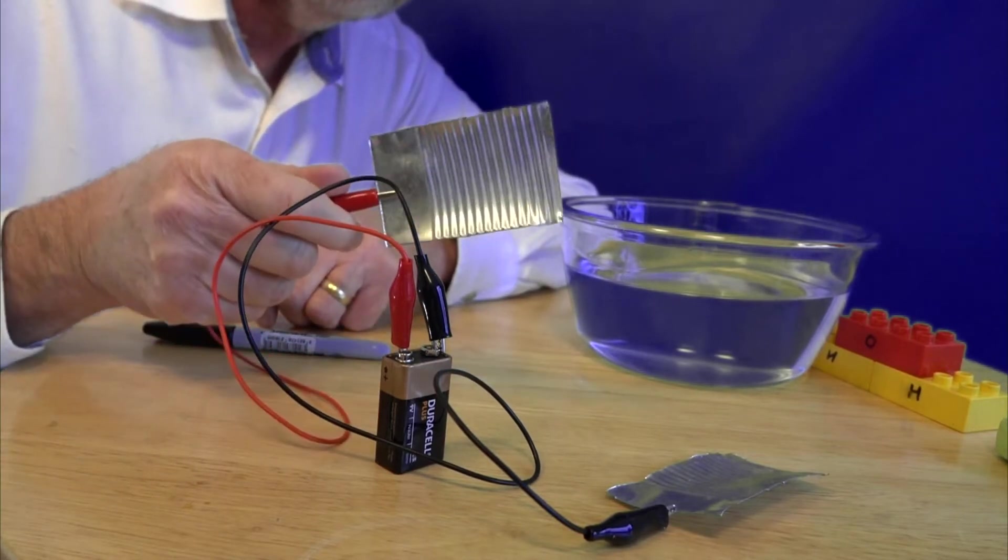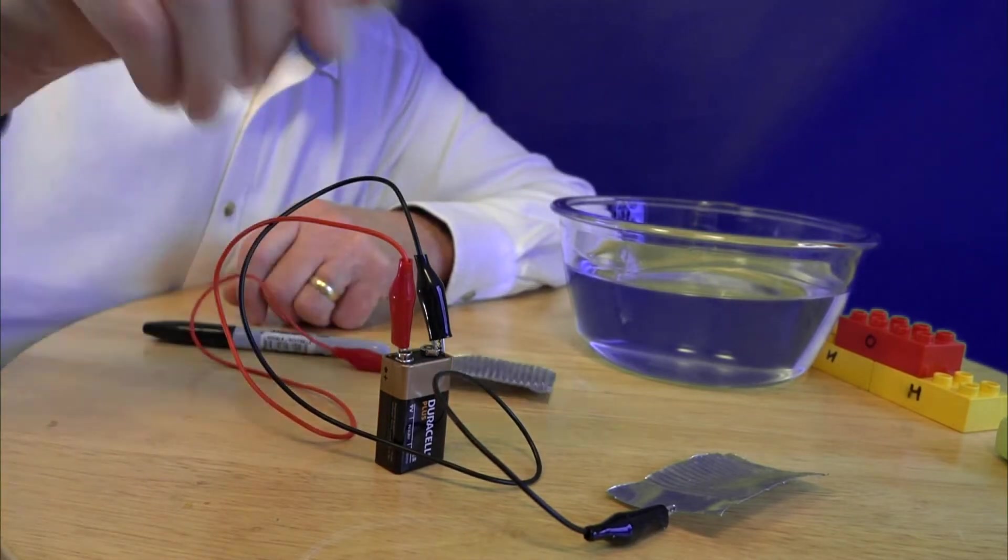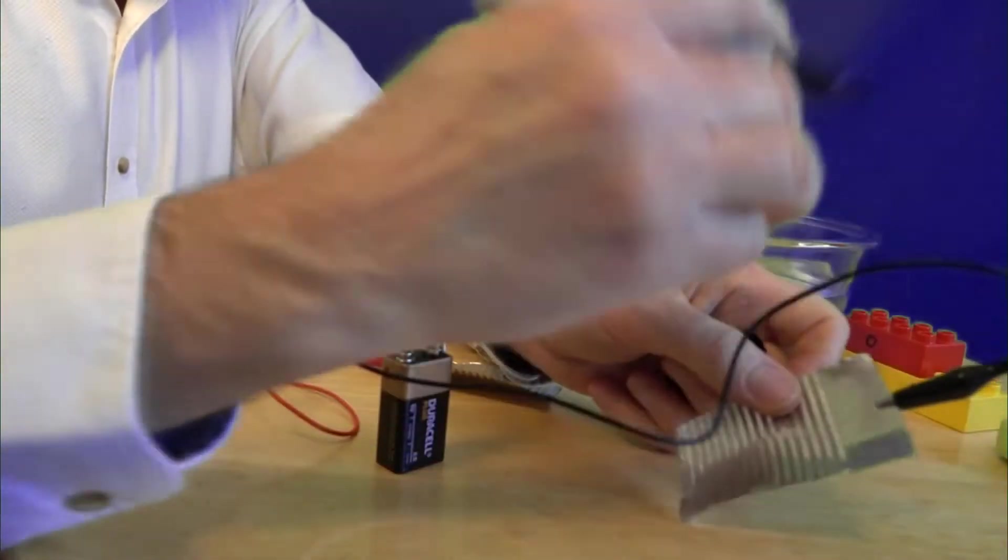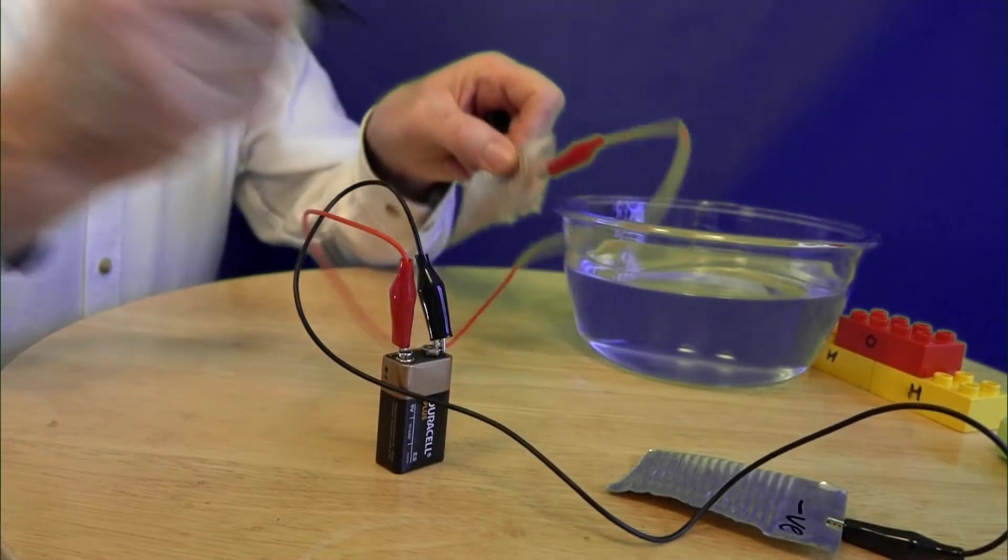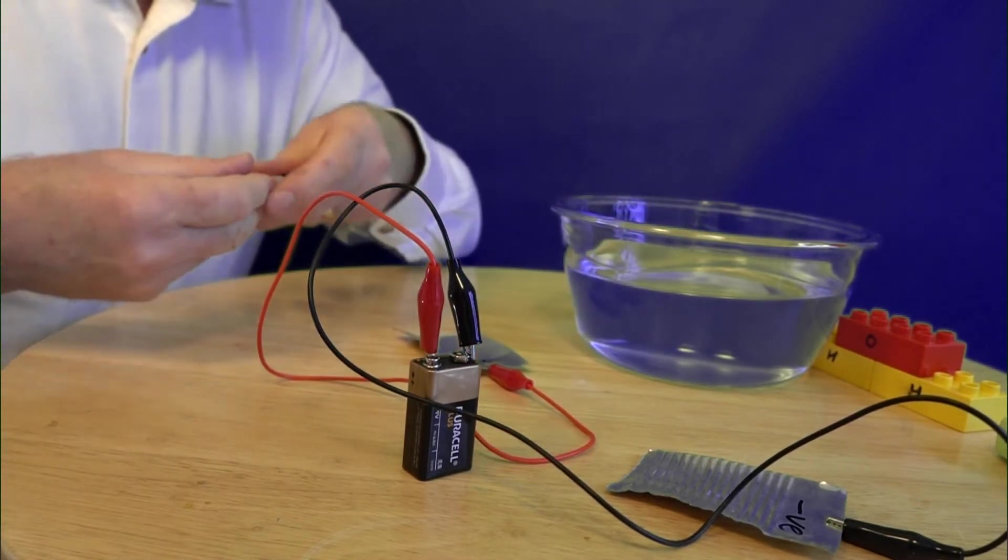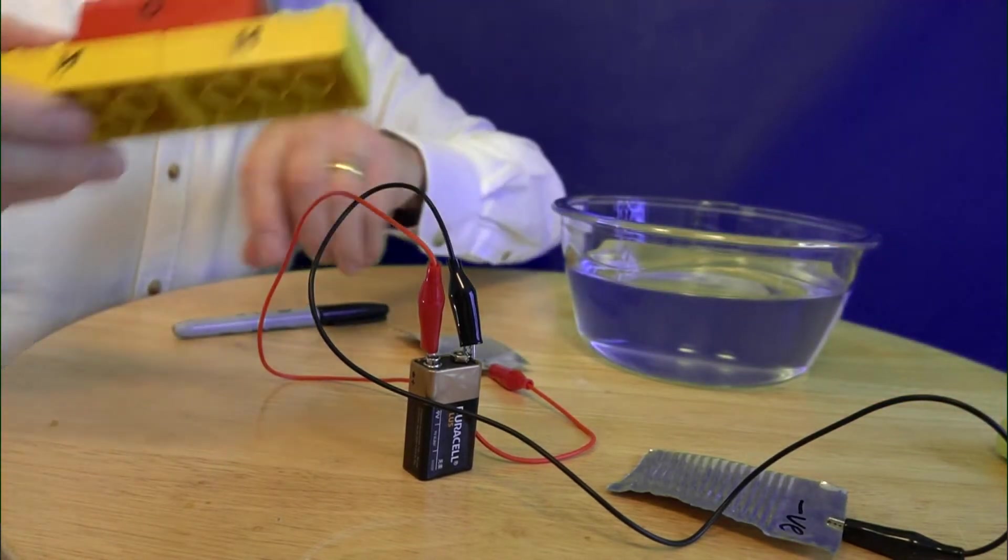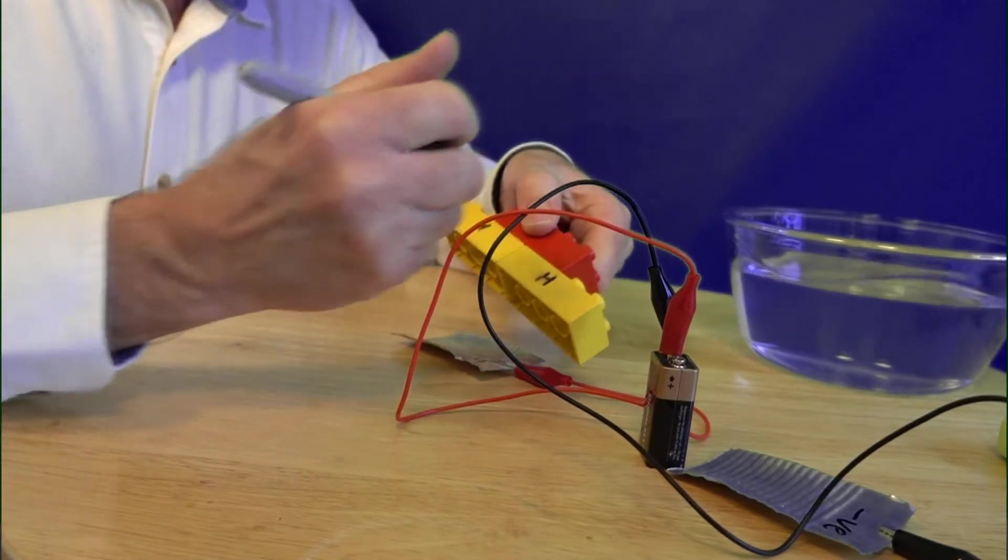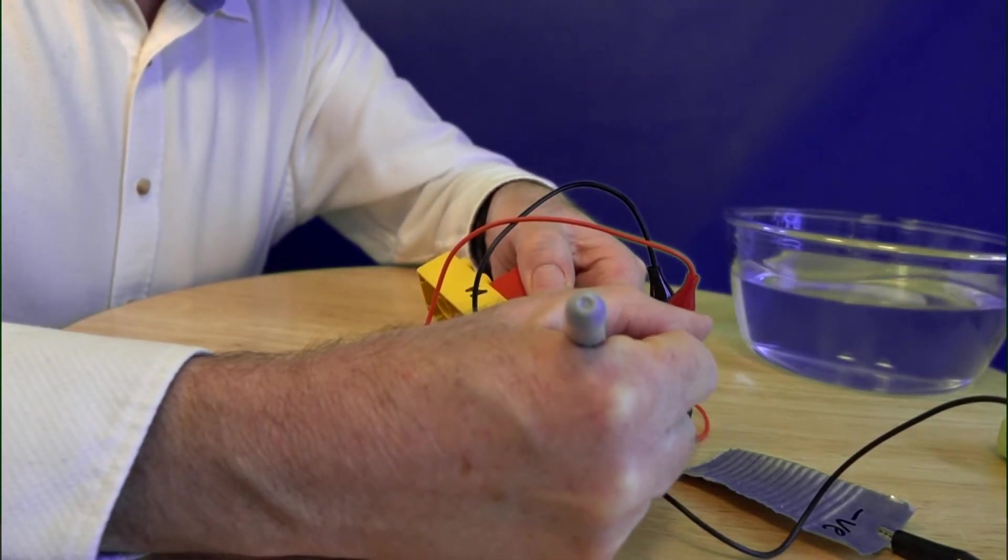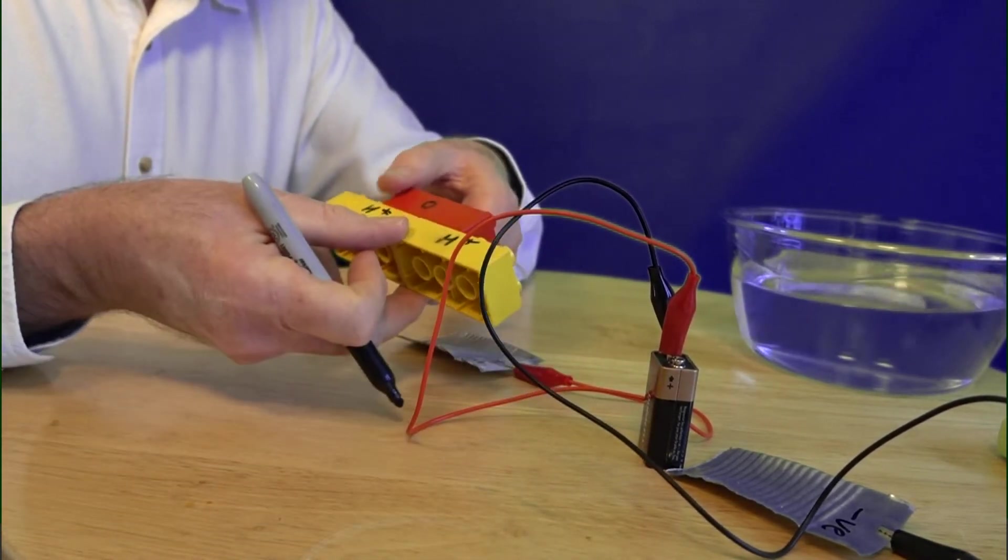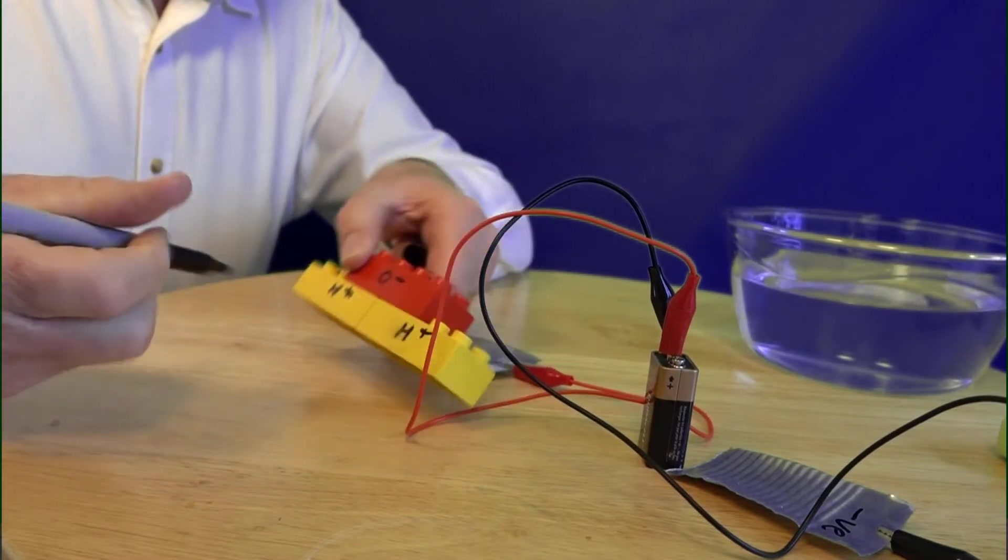What that is going to do is going to pass the electricity into these bits of tin so that this one, this piece of tin here, is positively charged and this piece of tin here is negatively charged. So let's write that on here. So we'll write a little minus or negative there and we'll write a little positive onto that one.